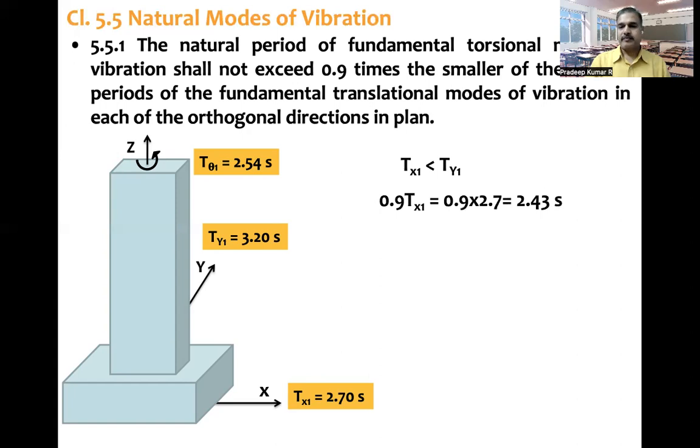So T theta, that is 90% of Tx1. What is Tx1? 2.7 seconds. So 0.9 multiplied by 2.7 seconds is equal to 2.43 seconds.